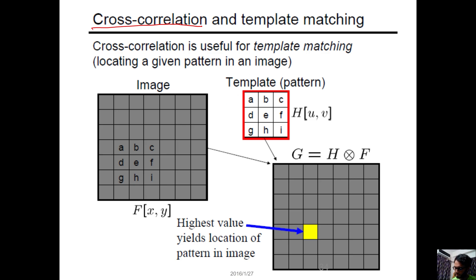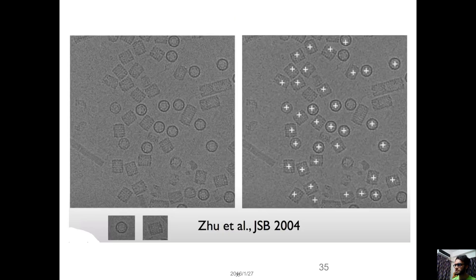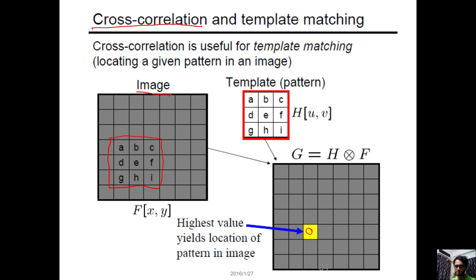Cross-correlation is used for template matching. When you have an image and want to match a template or pattern, you use correlation. You take a portion of the image as your template, then slide this filter over the entire image computing correlation values. The position with the highest correlation value indicates where the pattern best matches.